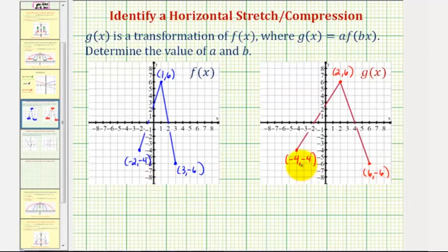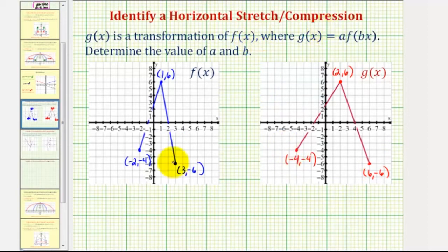By analyzing these points, notice how the y coordinates are the same, which means we do not have a vertical stretch or a vertical compression. But the x coordinates have changed, which means we have a horizontal stretch or compression. So we should be able to see that from f of x to g of x, f of x has been stretched horizontally to form g of x.